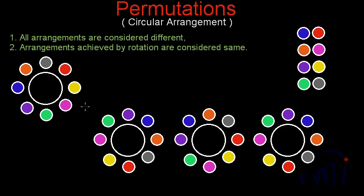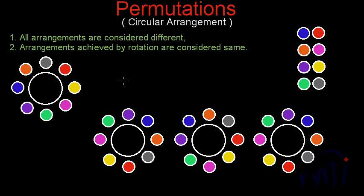Why? Because if we see properly, if we start from the red ball, going clockwise we have yellow, lavender, green, purple, blue, orange, and gray. The same order appears in the other rotated arrangements as well. All these arrangements can actually be achieved by rotating the first arrangement. So in this case, we are not counting all the n arrangements which can be achieved by rotating one arrangement.